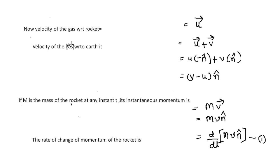Now, the velocity of the gas with respect to the rocket is U. The velocity of the gas with respect to the earth is U(−N̂) + V(+N̂), since N-cap is the unit vector in the upper direction and minus N-cap is in the downward direction. Therefore, the net velocity of the gas with respect to the earth is (V − U)N̂.